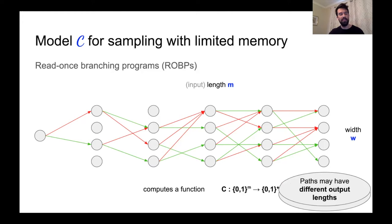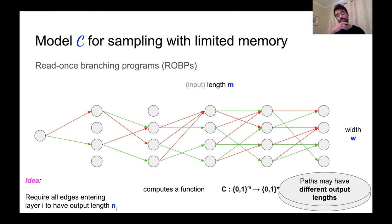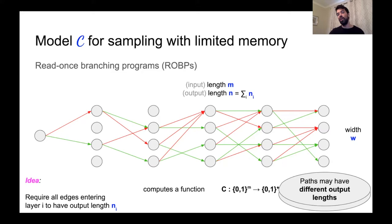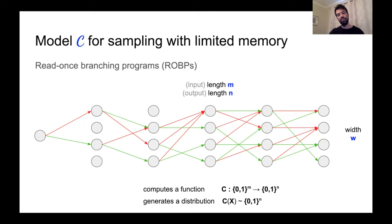We add one small restriction so that the output length is consistent over all inputs: for any two consecutive layers, we require that all edges between them have output labels with the same length, say N_i. For example, maybe all edges between two layers have output labels with length 2. The output length of this ROBP is just the sum of all the N_i. If we feed in a uniformly random string, we generate a distribution over n bits, which is what we want.